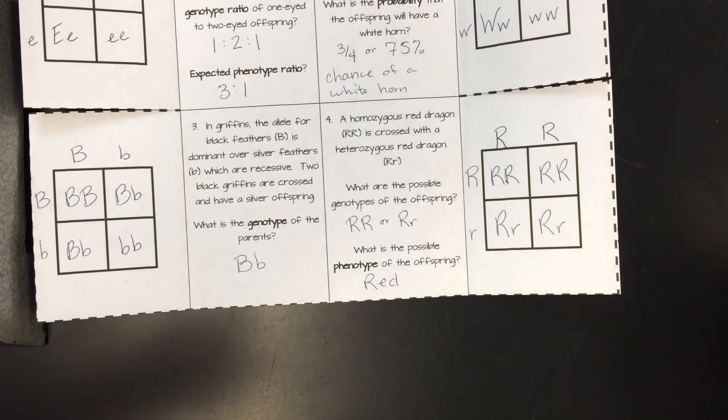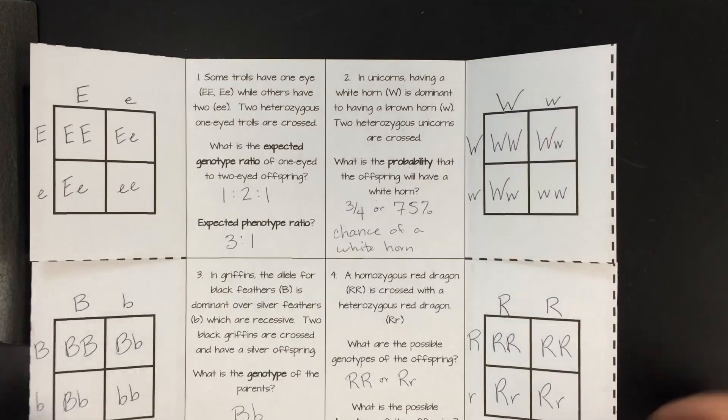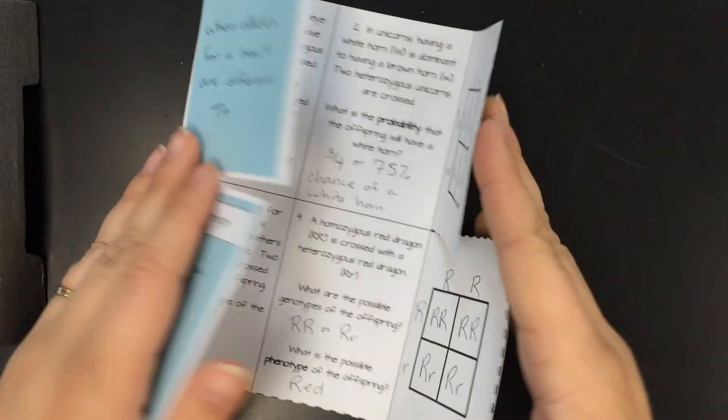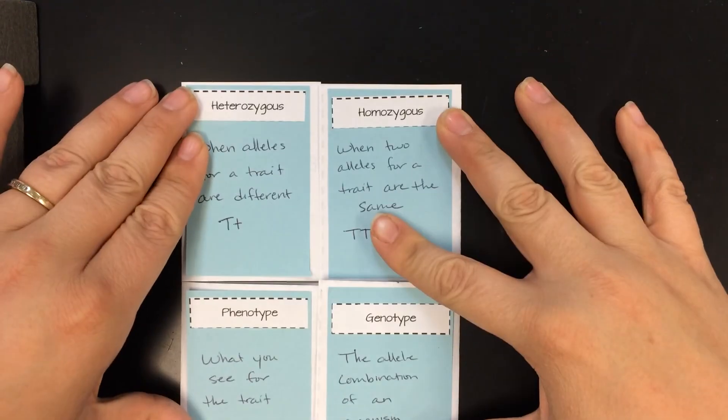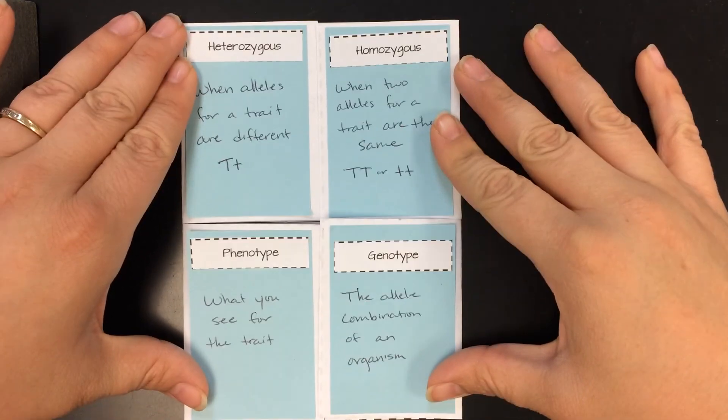So kids, that is how you work the inside of the little Punnett square. Just a simple little exercise. Again, you should have your definitions on the outside, and you'll stick it into your notebook like this. Thanks!